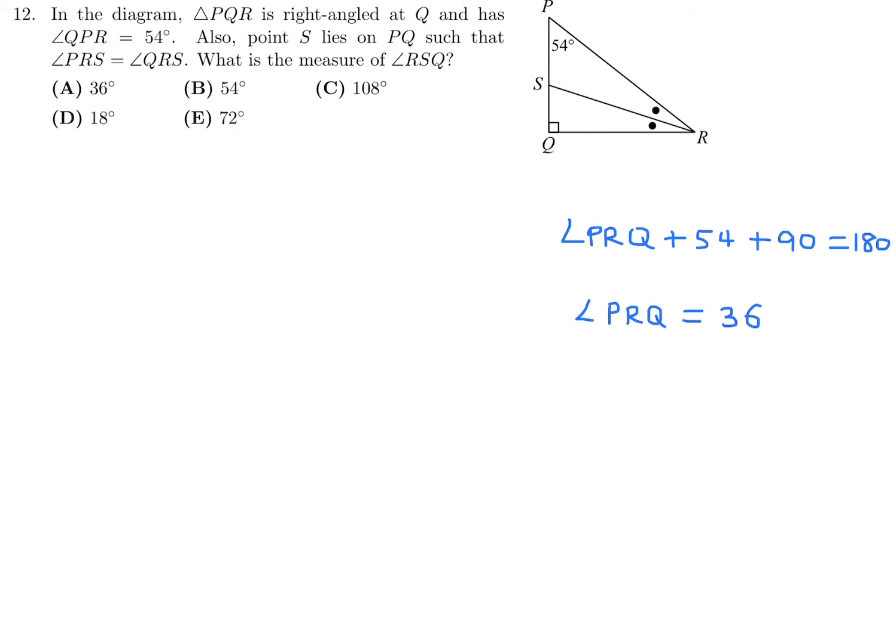Very quickly, we can figure out that angle PRQ is equal to 36. And therefore, since these are equal, each of those will be half of that 36. So let's call it theta. If 2 theta is 36, then theta is 18.